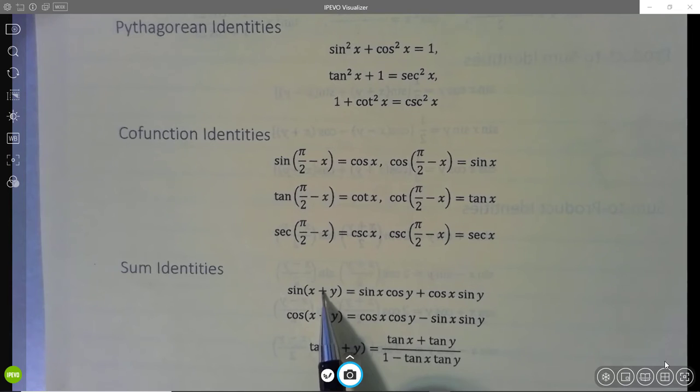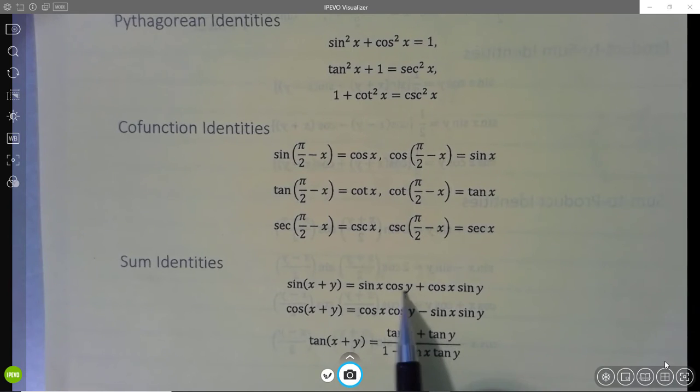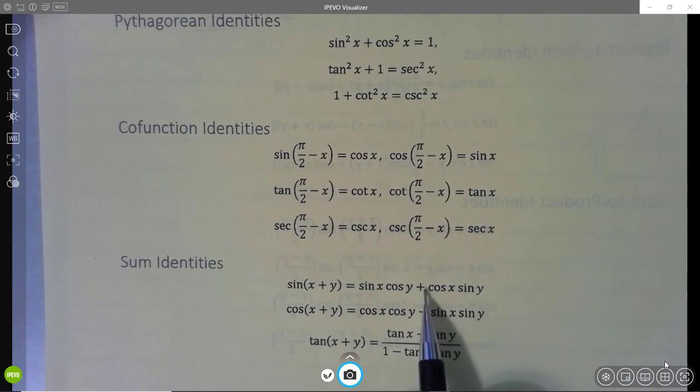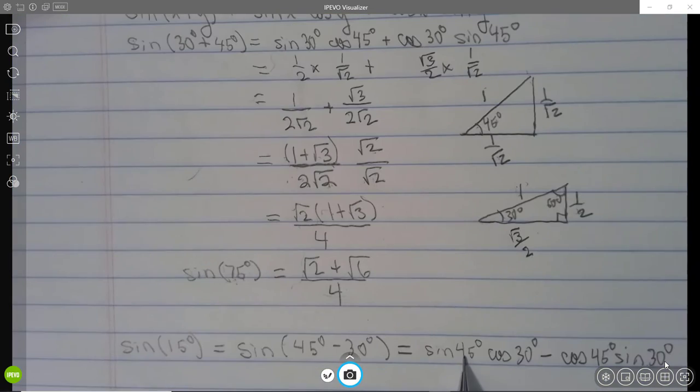If you put a minus y in here, you replace y by minus y. Well, cosine is even, so this one doesn't change. Sine is odd, so the minus sign comes through and you get this with a minus in it.